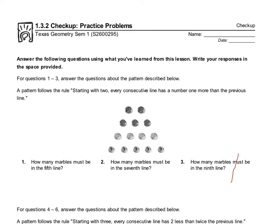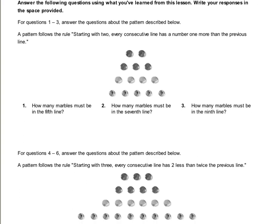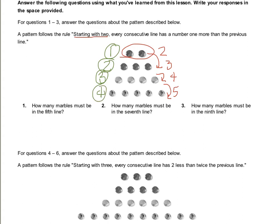Starting with problem one, we have a set of marbles. The statement says a pattern follows the rule starting with two, and every consecutive line has a number one more than the previous line. So line one has two, line two has three, line three has four, and line four has five. The first question asks how many marbles must be in the fifth line. The fifth line will have one more than the fourth line, so it must have six.